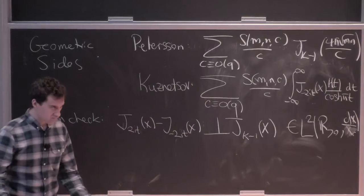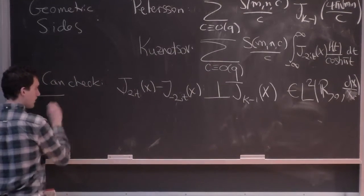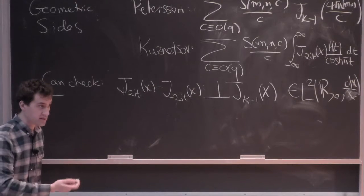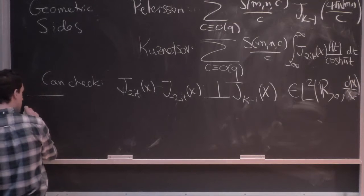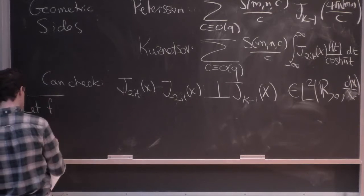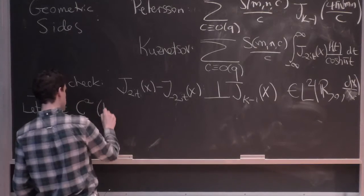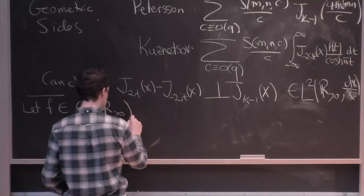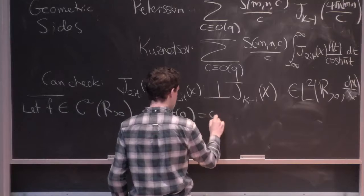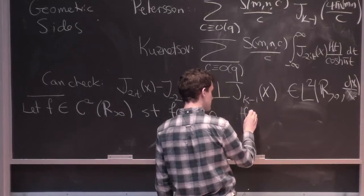And that's going to be the final formula, so now I'll give you the statement. So this is what's actually going to be useful for doing sums of Kloosterman sums. So I'm going to let my test function be f, so I'm going to let f be, say, twice continuously differentiable on the positive real line, such that, say, f(0) = 0, and this function f is non-oscillatory.